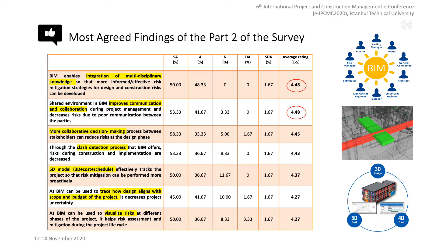In order to realize risks before construction or implementation, clash detection features in BIM may be beneficial. From the findings of the survey, it has been concluded that the clash detection feature, which is often used in most BIM applications, is important for managing risks, especially during construction and implementation. Another issue relates to the contribution of time and cost factors integrated in 3D models. 77% of the respondents agreed that tracking through 5D models would enable risk mitigation more proactively. Most of the respondents expressed that risk visualization through BIM at different phases of the project may help risk mitigation and assessment during the project lifecycle.